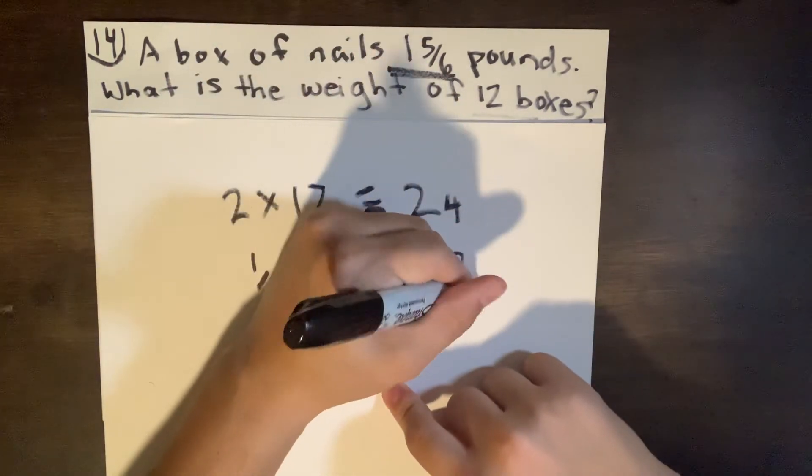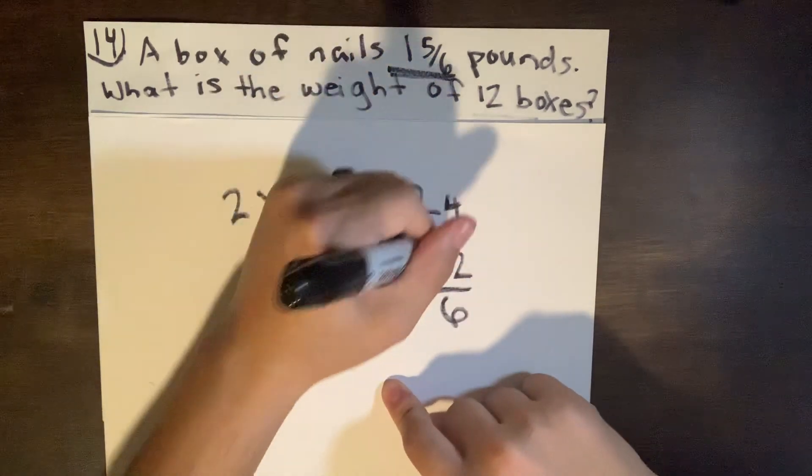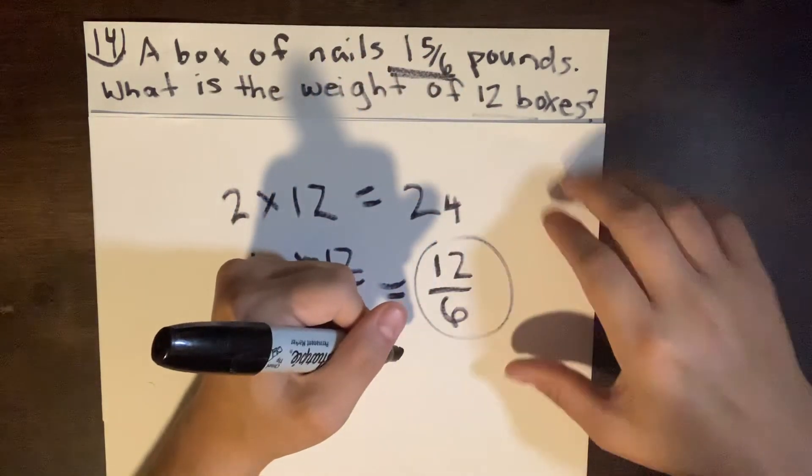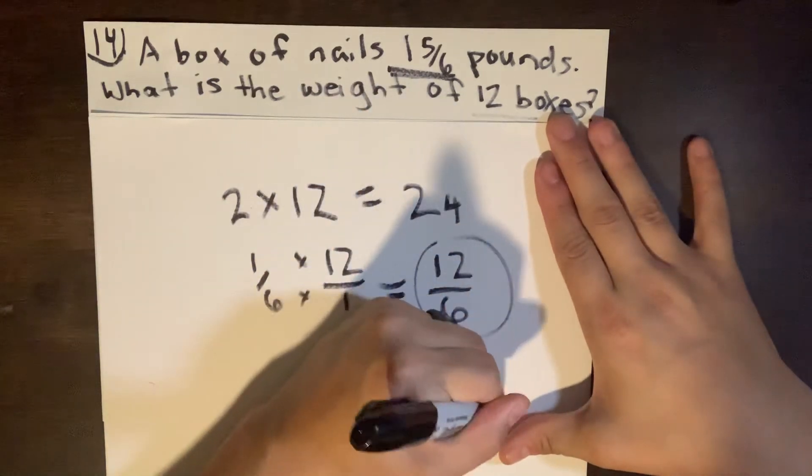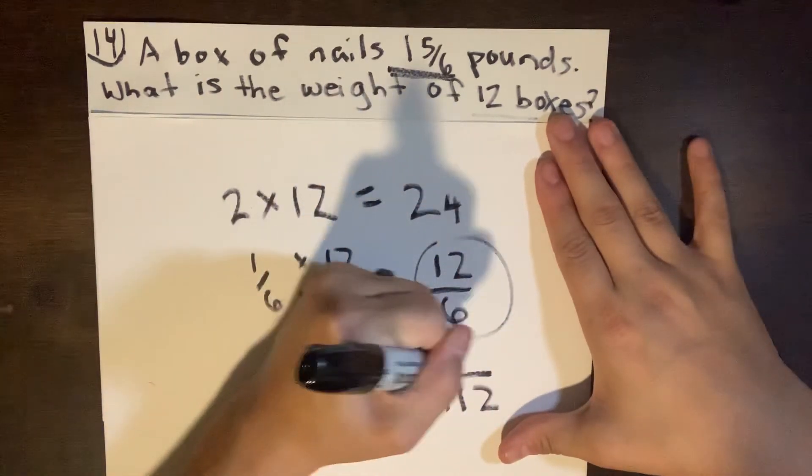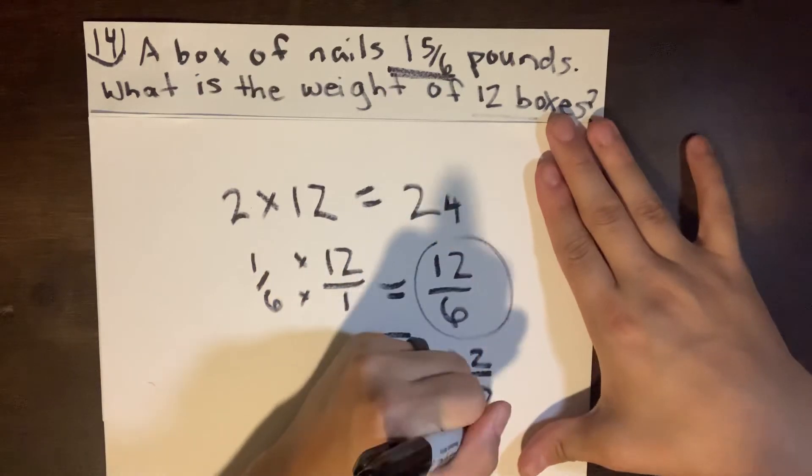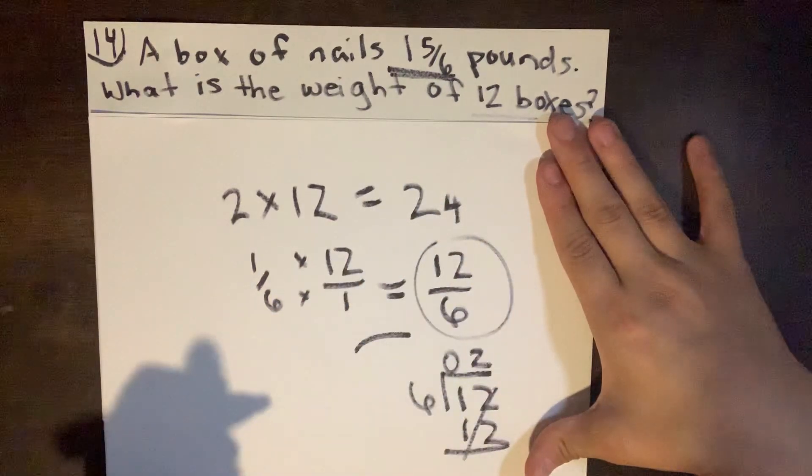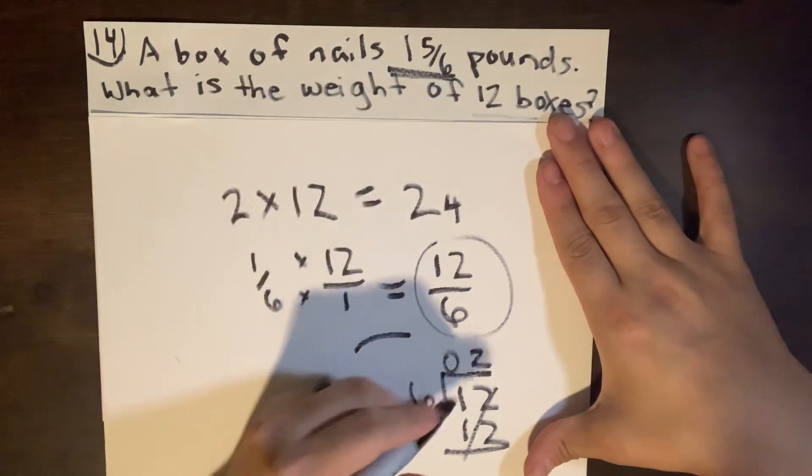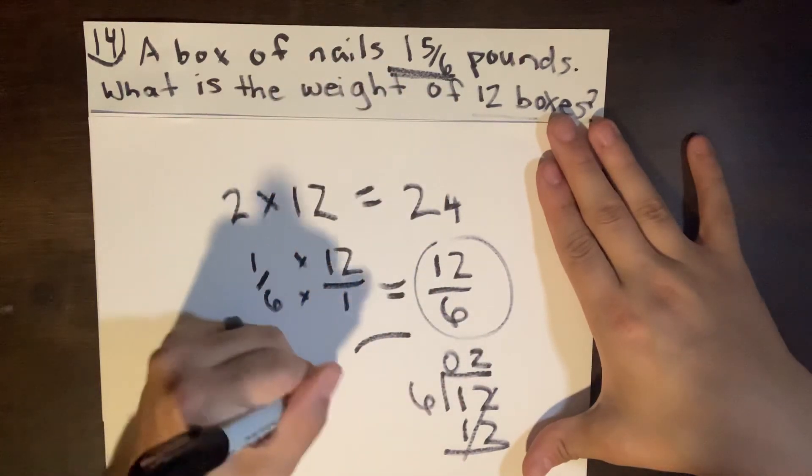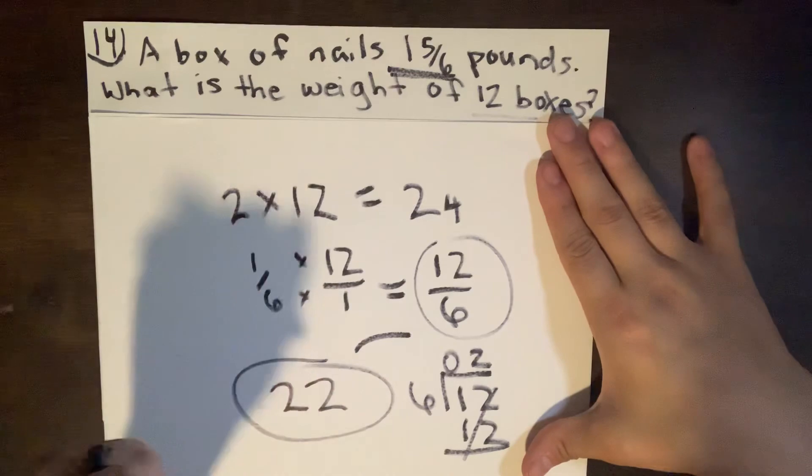Six times one equals six. It's a fraction. You want to simplify it the most. So twelve divided by six is going to be two. So it's going to be twenty four subtracted from two, making your total twenty two pounds.